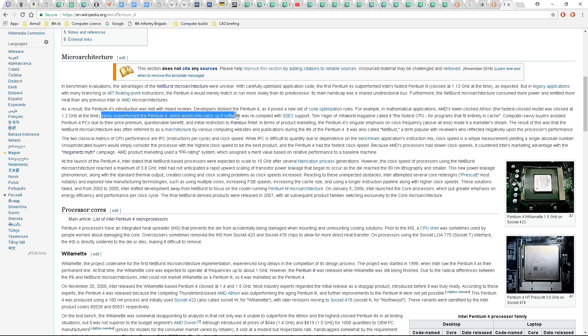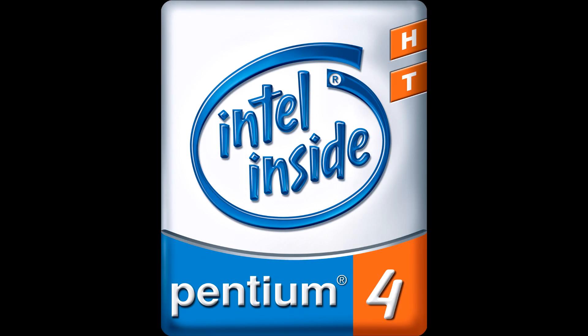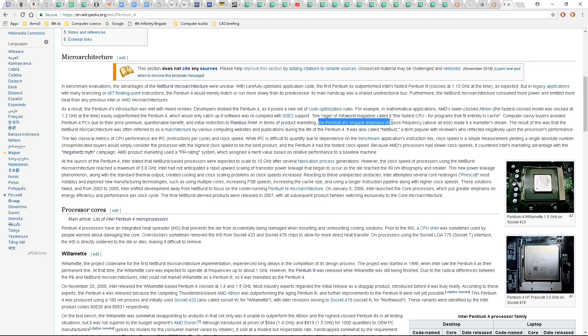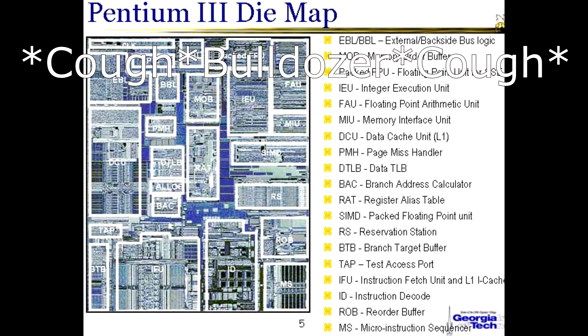So came the next wave of Intel CPUs, the Pentium 4. This was a brand new and radically different architecture. The architecture was built for speed and speed alone. Intel had made the first attempt at a CPU that went for clock speeds over IPC, and in hindsight, AMD should have taken note.